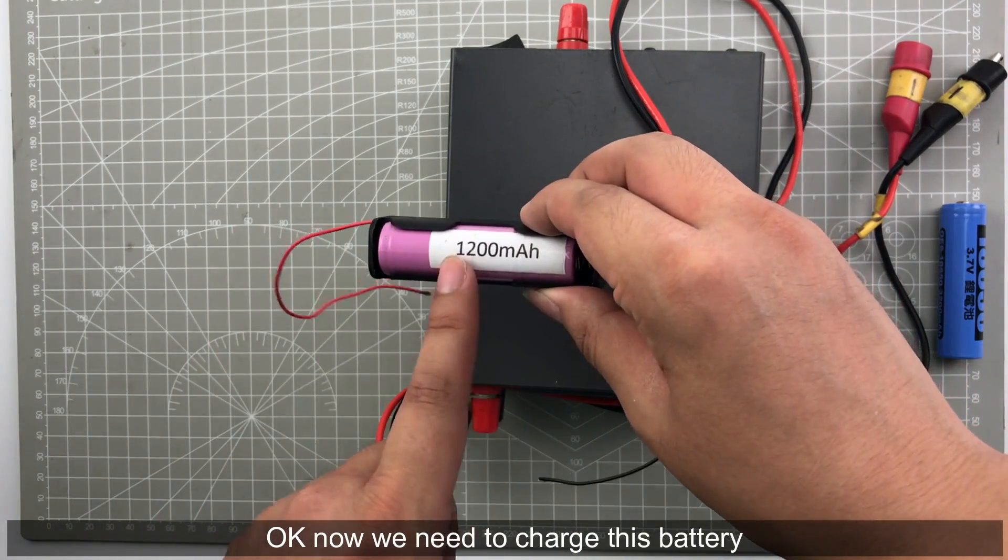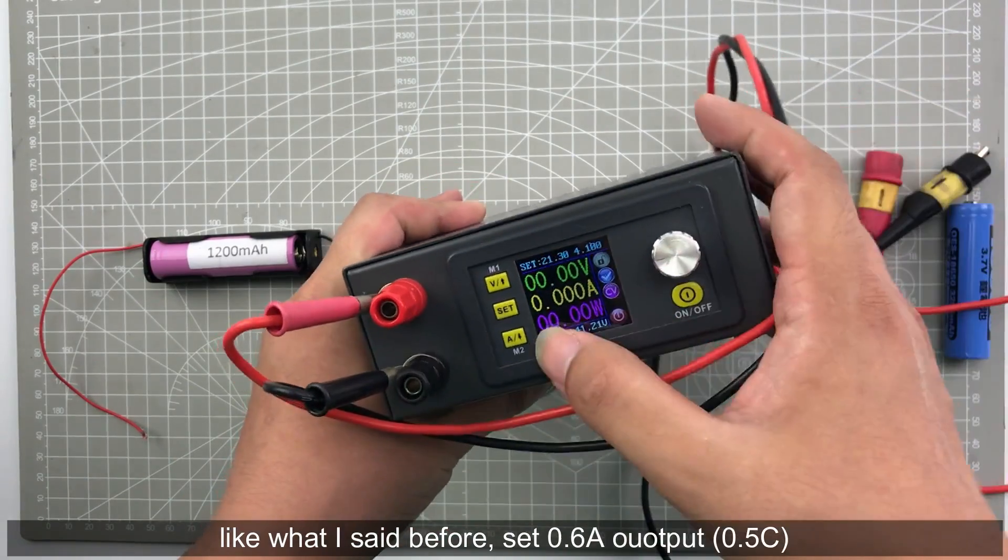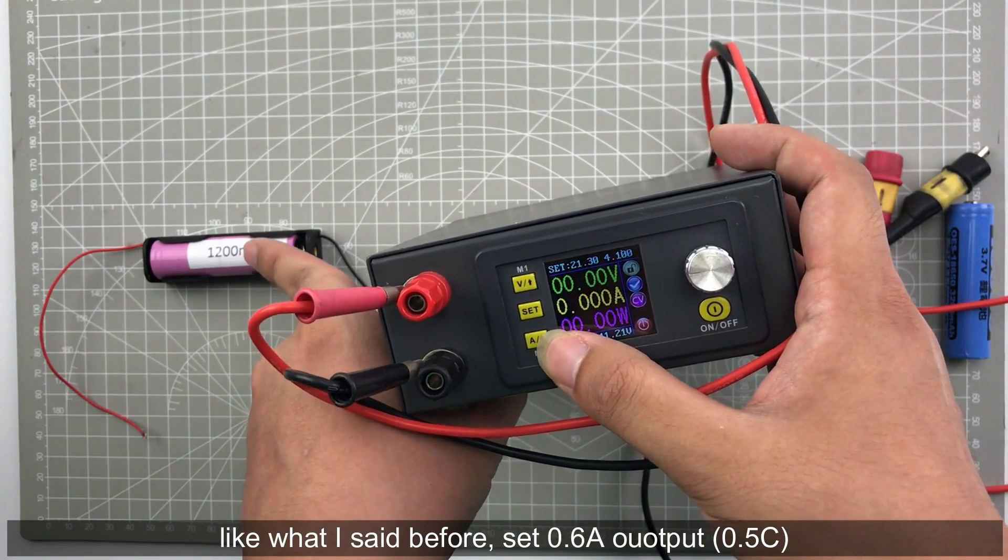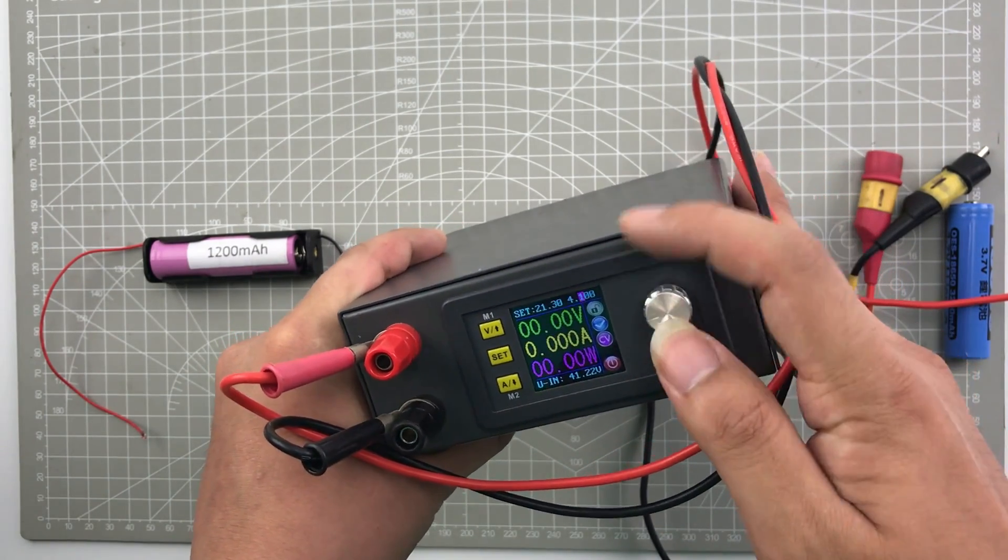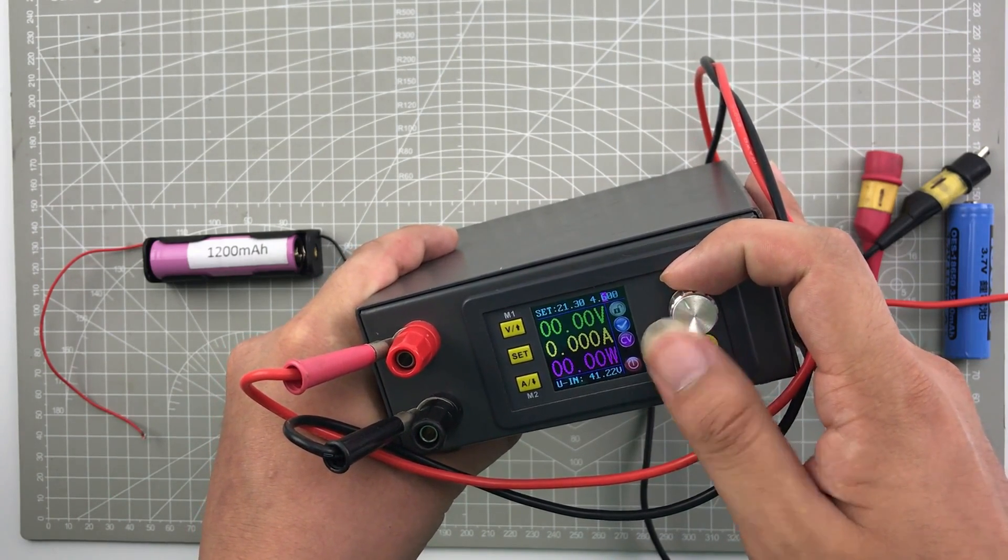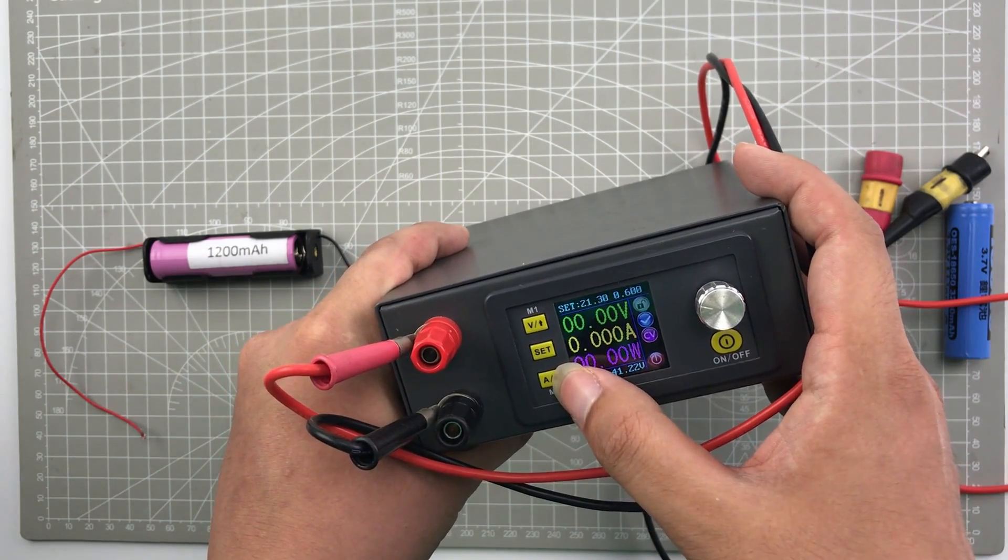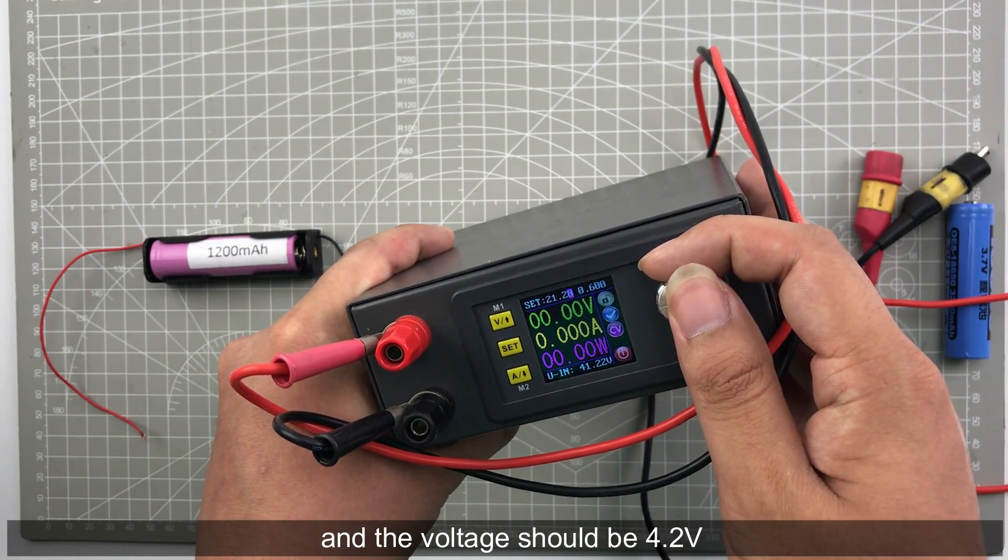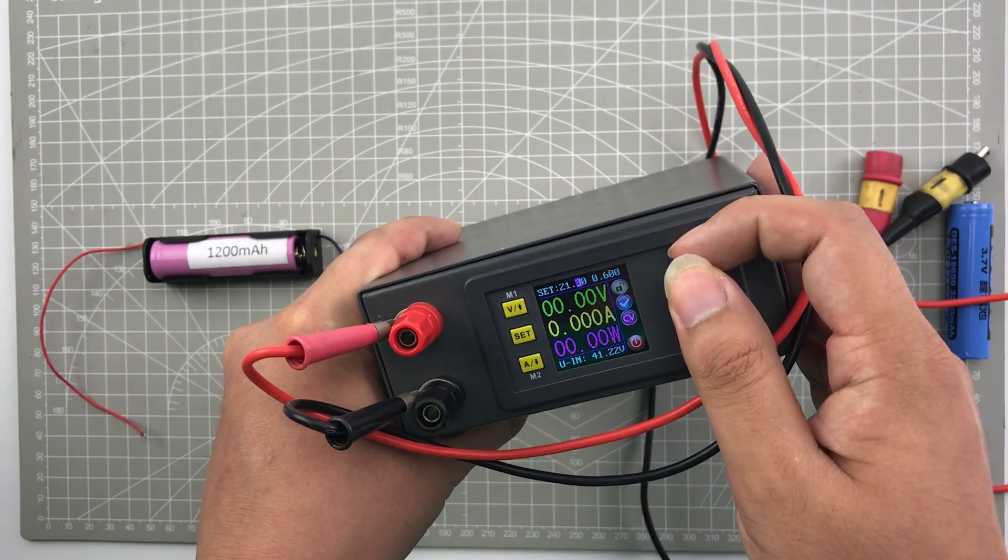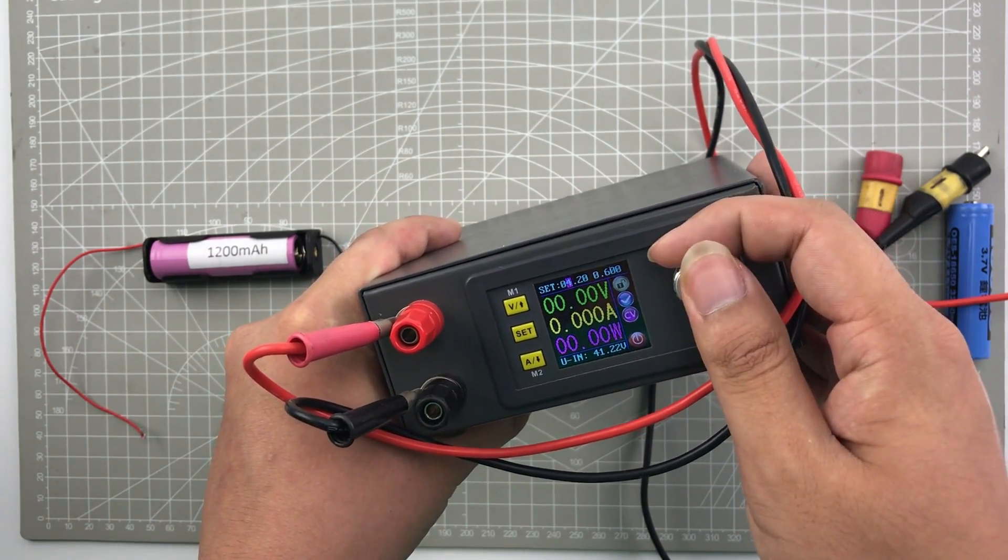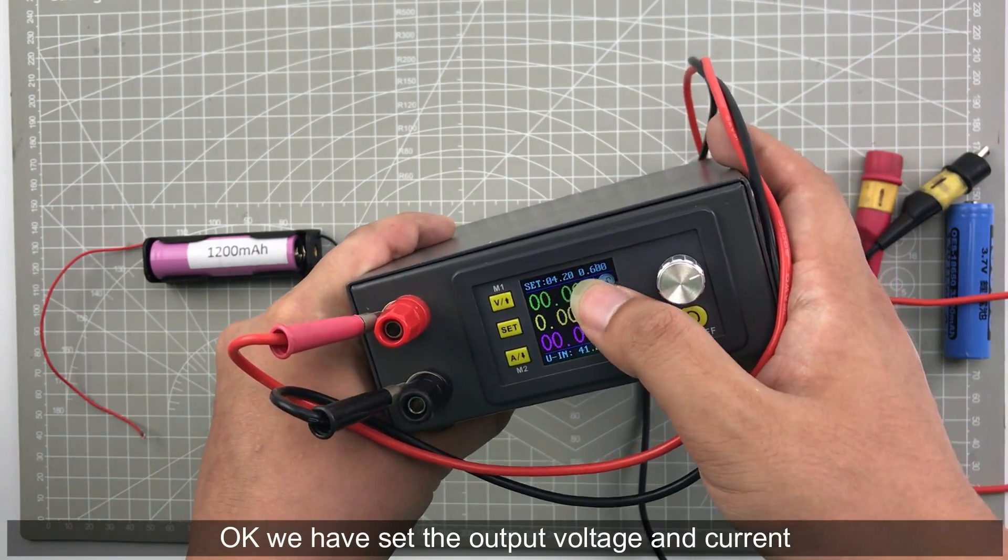Now we need to charge this battery. Like what I said before, we need to set 0.6A, which means half-C. And the voltage should be 4.2V.